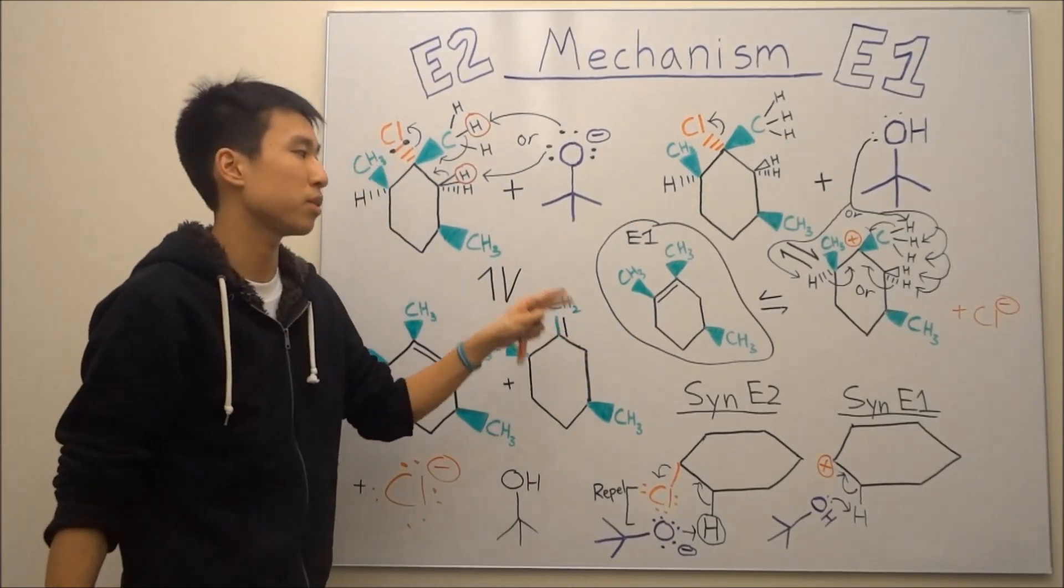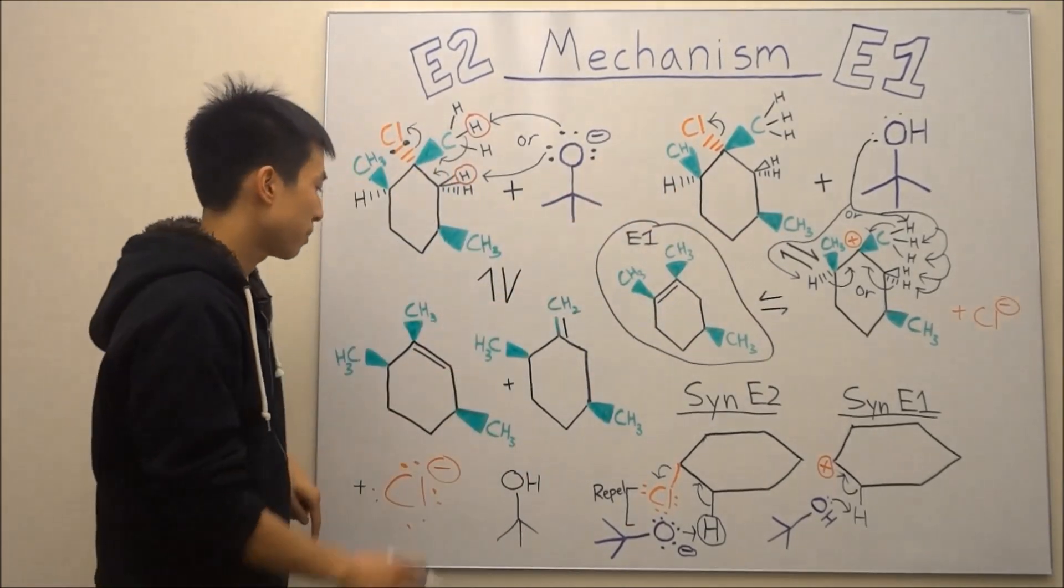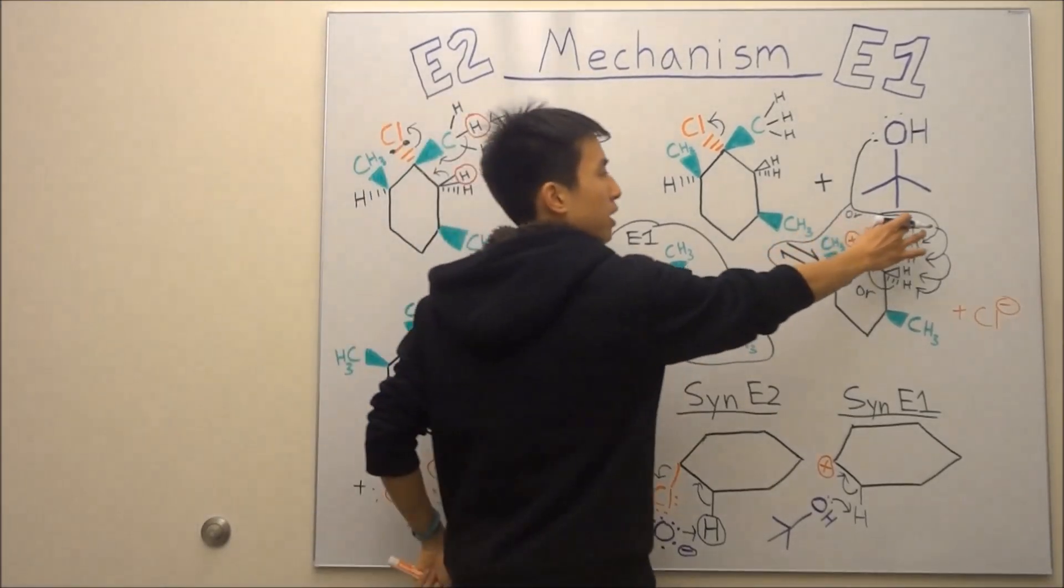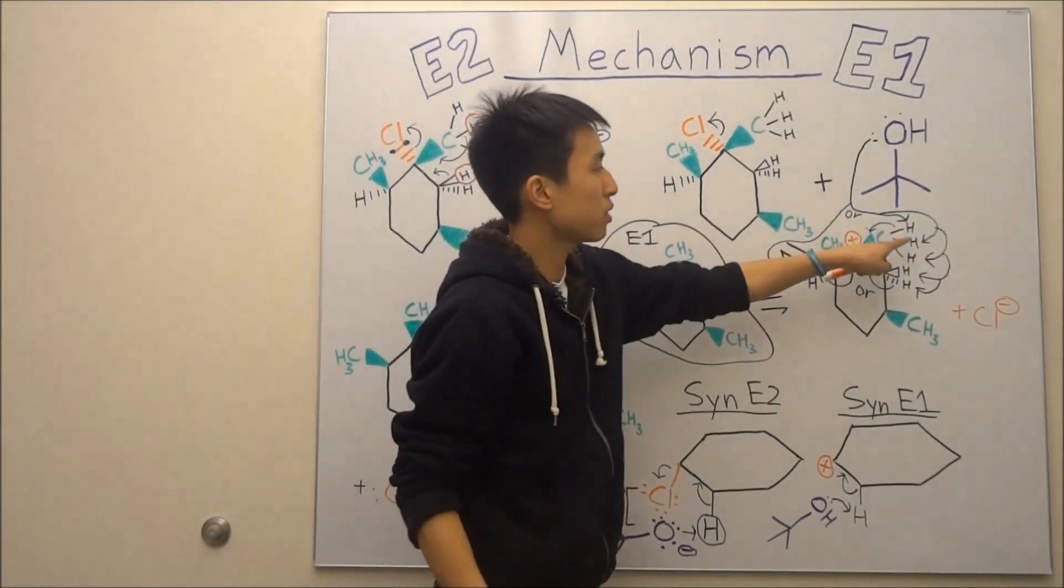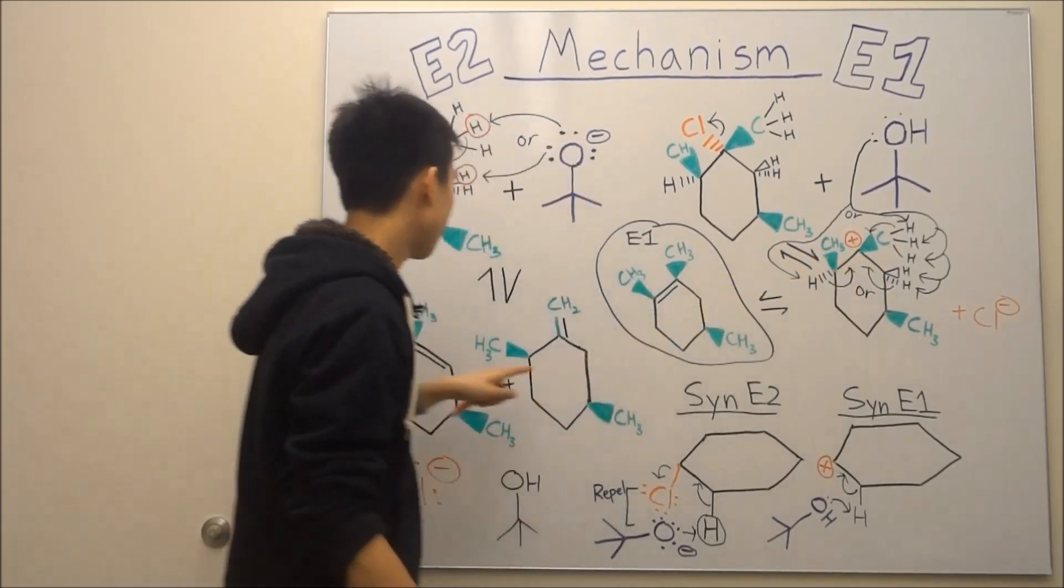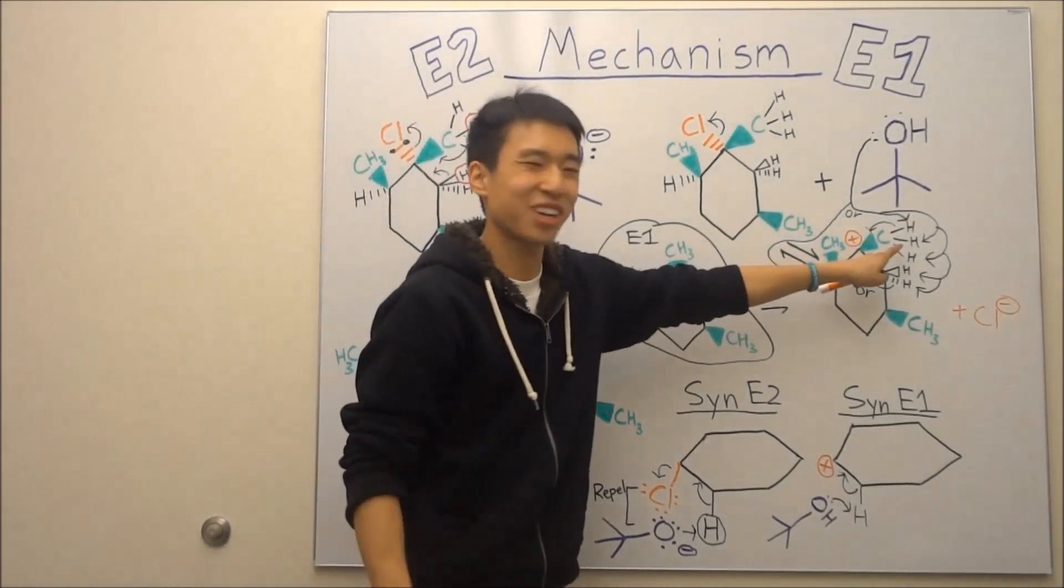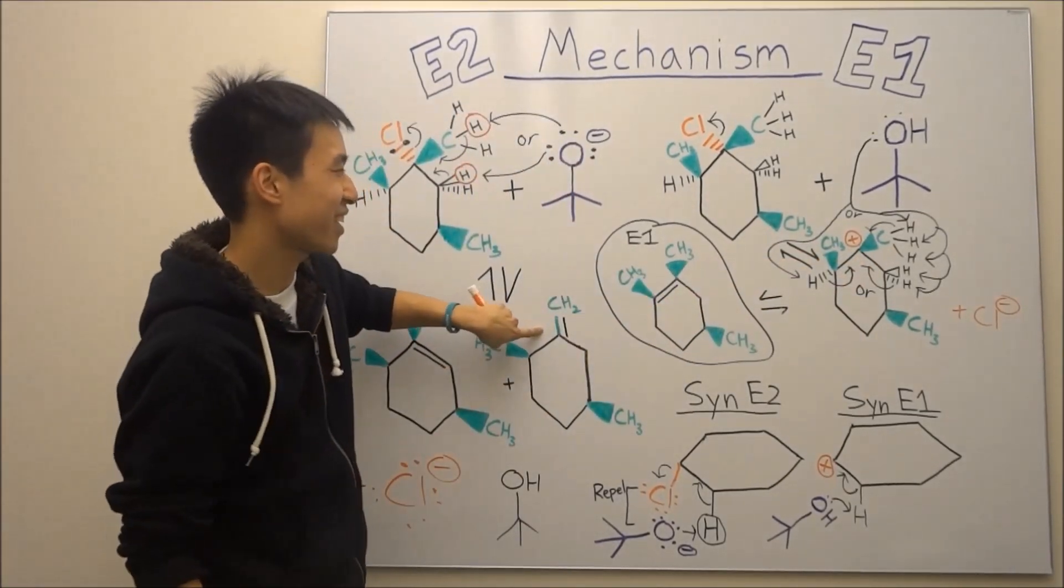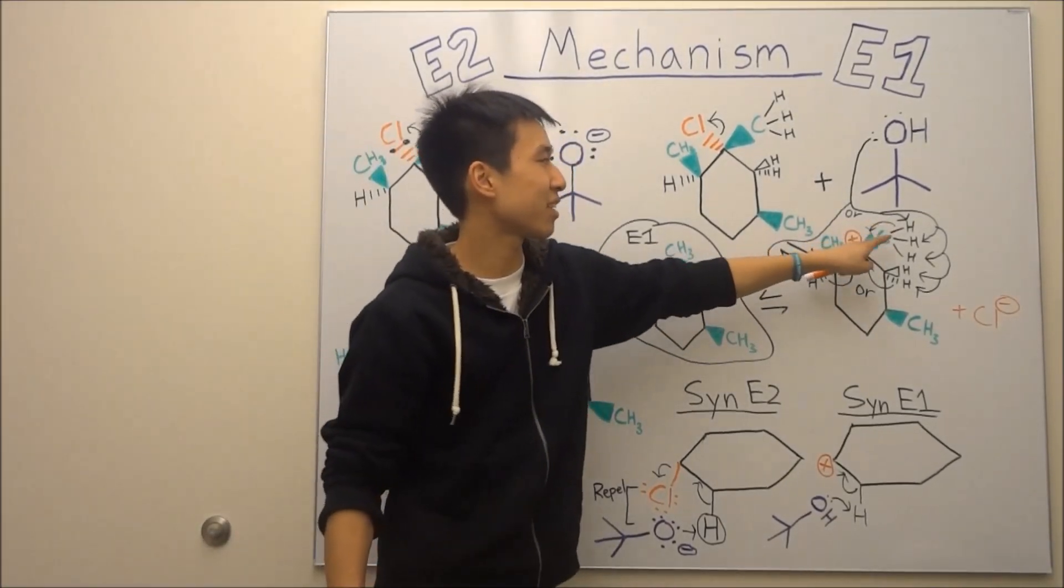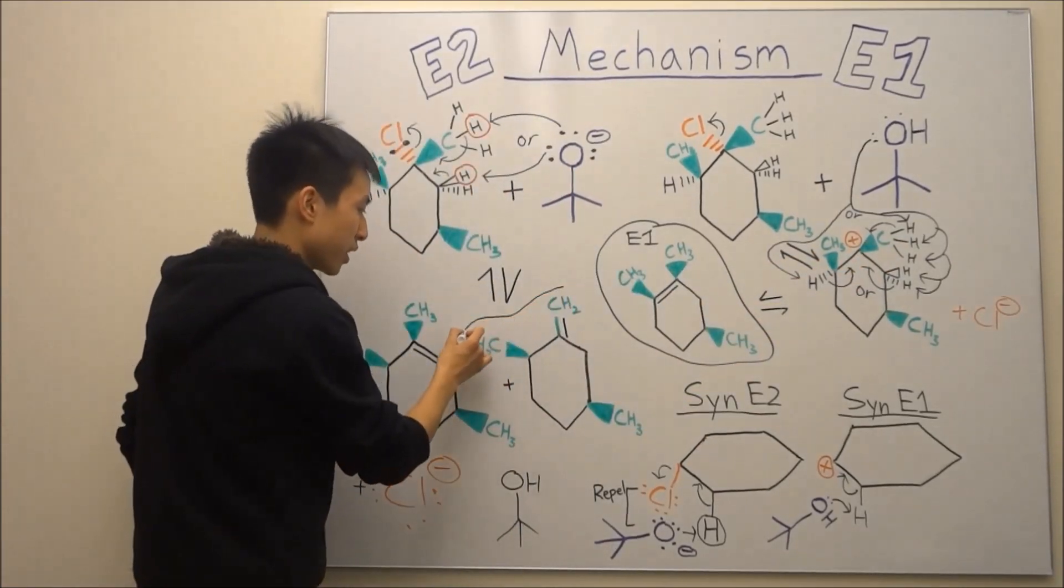because only in E1 can you attack a hydrogen that was originally syn with your leaving group. But these here, if you attack any of these three hydrogens—one, two, three—all their electrons are going to go and form a double bond right over here. All their electrons are going to form a double bond right here. This is going to go over here, this is going to go over here, this is going to go over here, giving you this product right here.